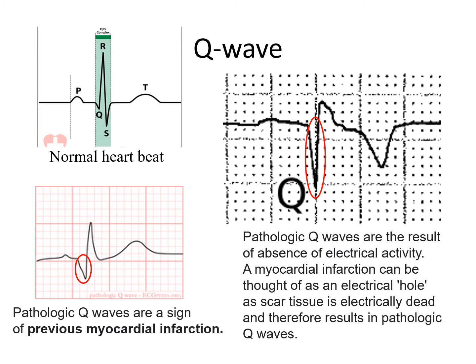The Q wave will develop shortly after the MI and persist long after. A pathologic or pathologic Q wave is deep and wide, nothing like you see on a normal heartbeat. If it's deep or wide, it is a pathologic Q wave and is an indication of a previous or past myocardial infarction.